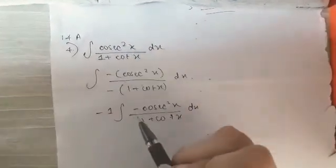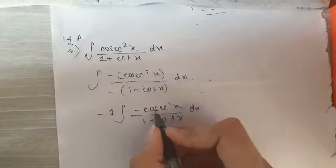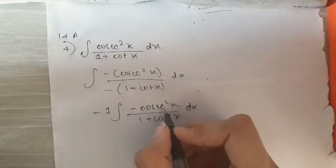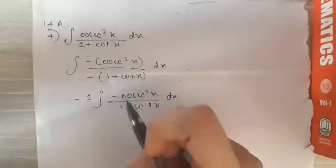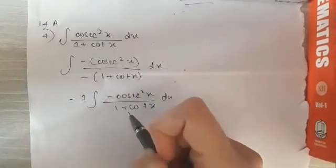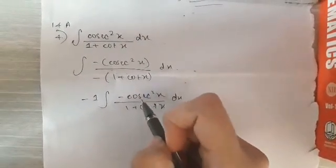which is the question itself. So now I have a minus sign in the numerator and the numerator is the differentiation of the denominator. So we know that when we have the differentiation of the denominator in the numerator, we